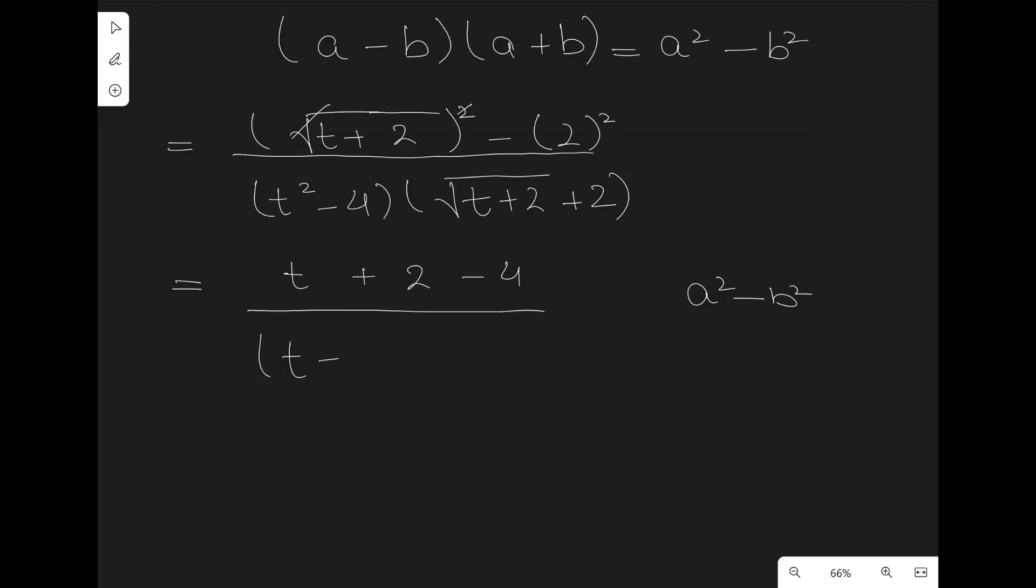So, we can always write it as t² - 2², multiplied by at the same time,